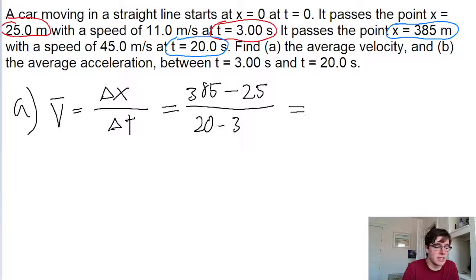If you put this into a calculator, we find 21.2 meters per second. That's the average velocity.